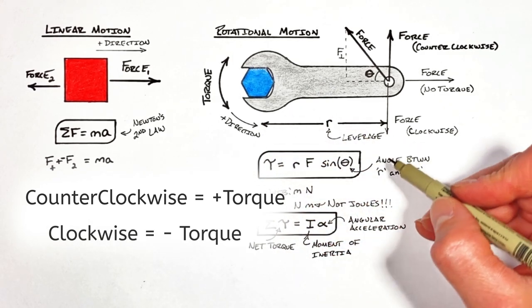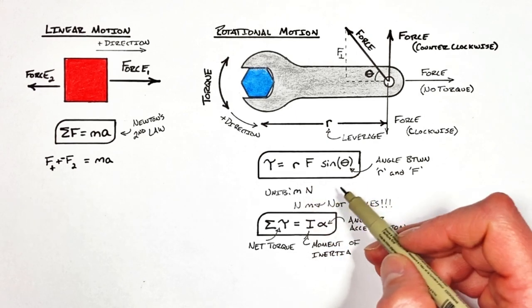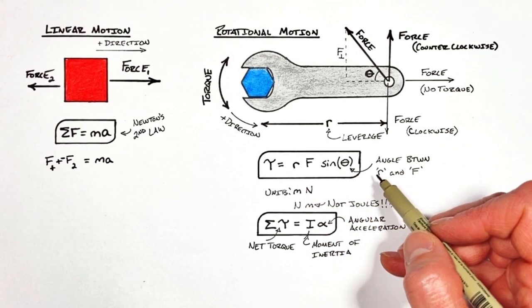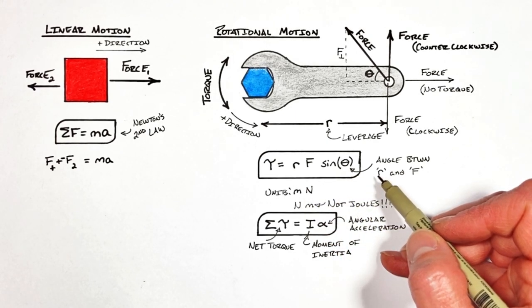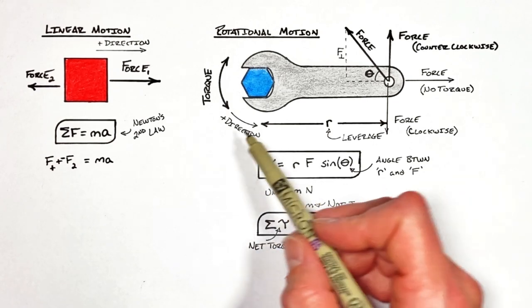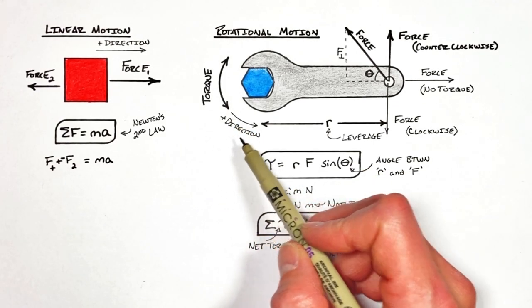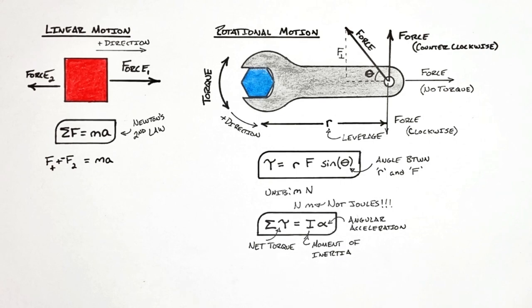Now where that comes from goes back to something called cross products and linear algebra which I don't want to get into today. That's an issue for another day. The important takeaway though is that we still have both positive and negative directions when dealing with torque.